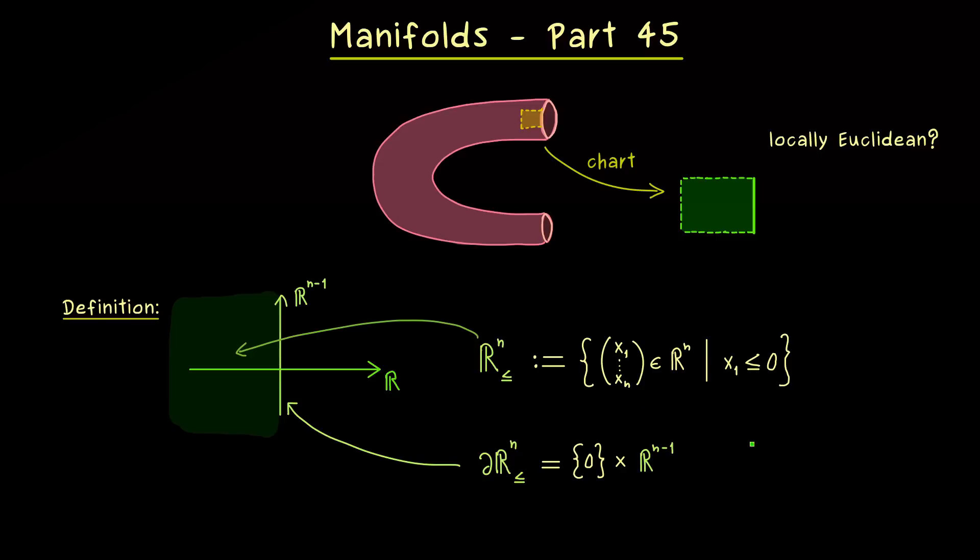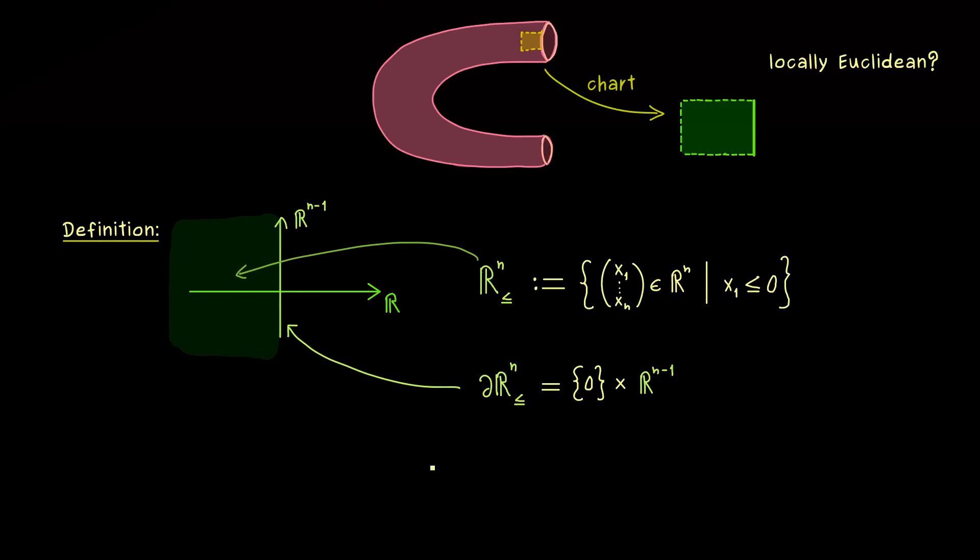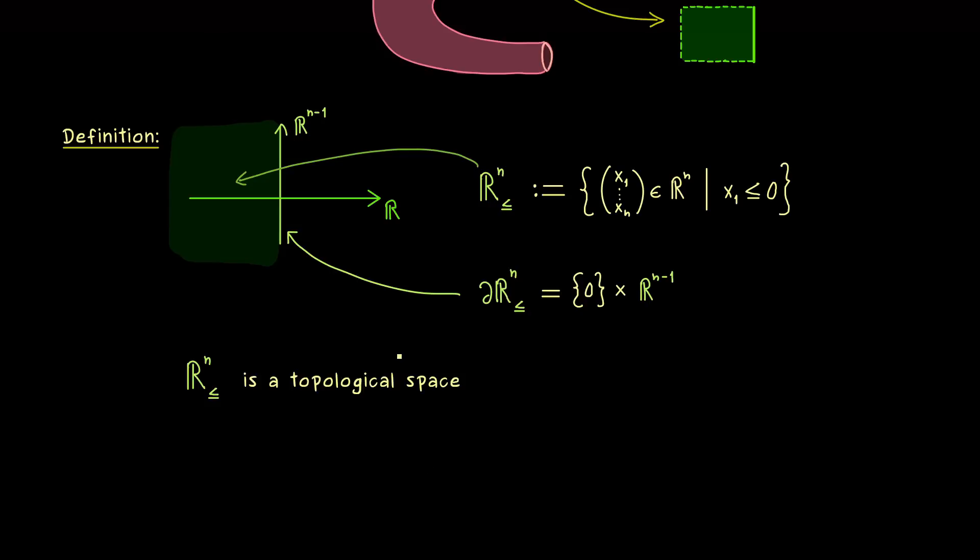And at this point I should already warn you that this partial d is very often used when we talk about manifolds with boundaries. However, in that context it usually does not denote the topological boundary as we have defined at the beginning of the series. So just be careful when you see the symbol, please note the context where it's used.